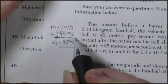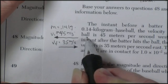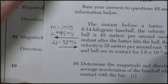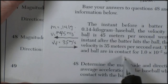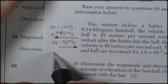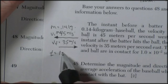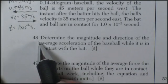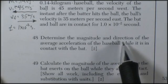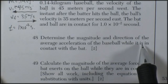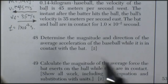I would have to go all the way to zero before I could even begin going in the other direction. The bat and ball are in contact for 1 times 10 to the negative 2 seconds. Time is 1 times 10 to the negative 2 seconds. Question 48. Determine the magnitude and direction of the average acceleration of the baseball while it is in contact with the bat.